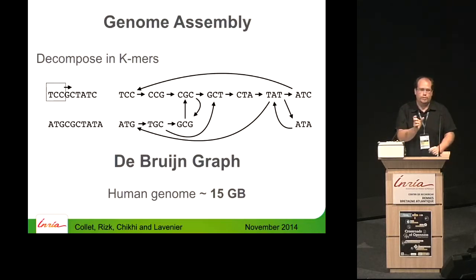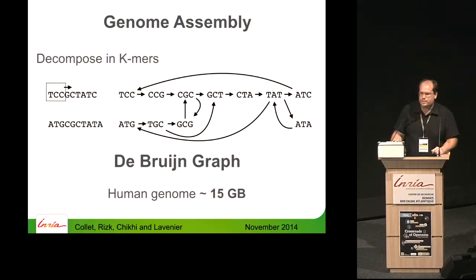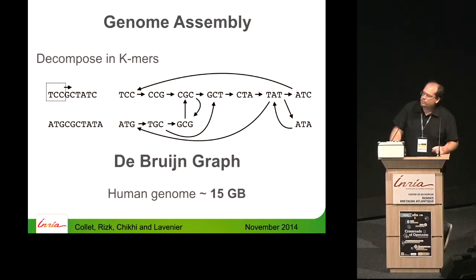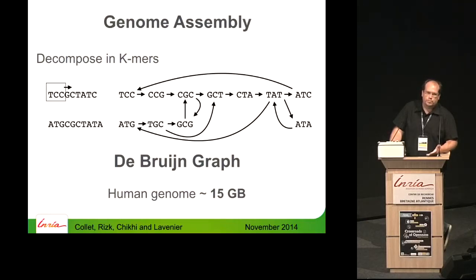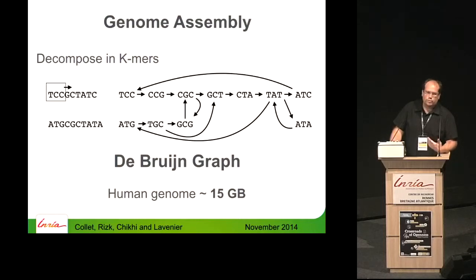For the human genome, it's about 15 gigabytes in memory with a straightforward data structure — you store each K-mer as a string with its eight possible connected K-mers, because you can add an A, C, T, or G, the four bases of DNA. This is a little too big to assemble a genome on a laptop computer. You need a cluster of computers with more memory. What we want is to allow genome assembly on a laptop computer with less than eight gigabytes.